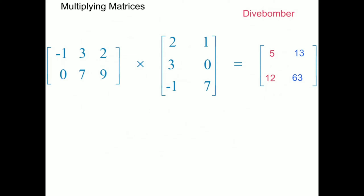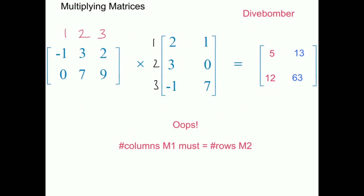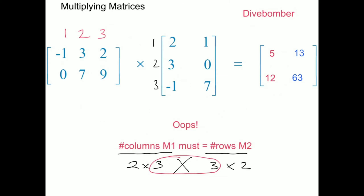The answer matrix is: 5, 13, 12 and 63. I did misspeak earlier — to multiply matrices, the number of columns in matrix 1 (1, 2, 3 columns) must match the number of rows in matrix 2 (1, 2, 3 rows). So make sure you get that right: the number of columns in the first matrix must equal the number of rows in the second. If we write the orders — a 2 by 3 multiplied by a 3 by 2 — as long as the inside numbers match, we can do the multiplication.